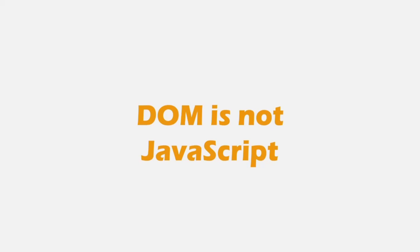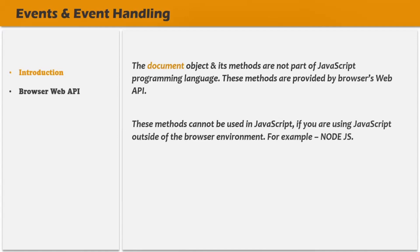One very important point to remember here is that these document object methods are not part of the JavaScript programming language. These methods are provided by browsers. These methods cannot be used in JavaScript if you are running JavaScript outside of the browser. For example, we can also run JavaScript in Node.js environment, and Node.js is a runtime environment which allows us to use JavaScript on the server as a server-side programming language. There, the JavaScript code is executed by Node.js runtime and not by the browser, and hence we cannot use methods like getElementById or querySelector in a Node.js environment.